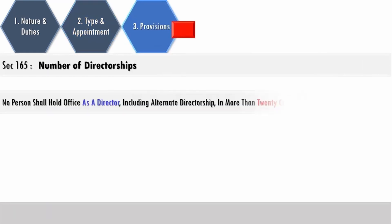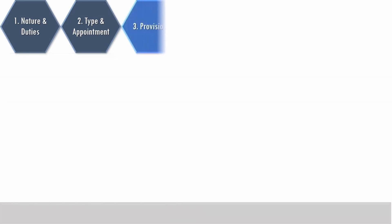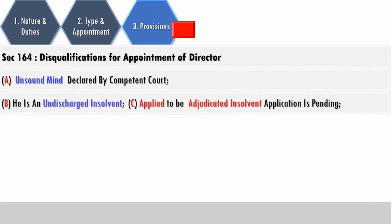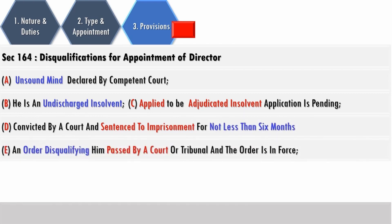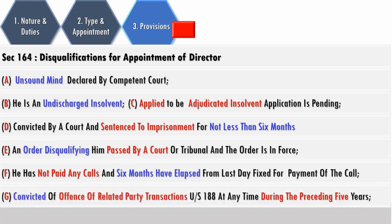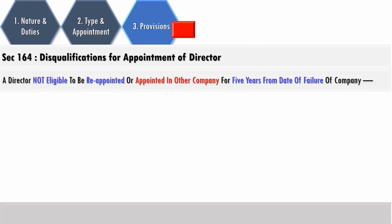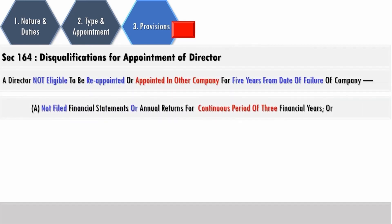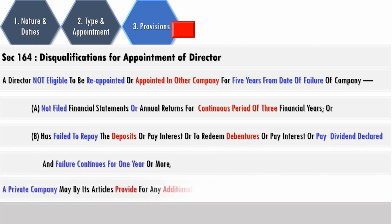The second company for a small shareholder director shall not be in a business competing with the company. Directorships including alternate directorships must not exceed twenty at the same time; the maximum number of public companies shall not exceed ten. Members by special resolution are at liberty to specify a lower number of companies. Disqualifications specified under Section 164 include: being of unsound mind as declared by a competent court, being an undischarged insolvent or having applied to be adjudicated insolvent with application pending, being convicted by a court and sentenced to imprisonment for not less than six months, having a disqualifying court order in force, having not paid any calls with six months lapsed from the last day fixed for payment, or having been convicted of an offense related to related party transactions during the preceding five years. A director is also not eligible to be appointed or reappointed for an offense committed by the company where the company has not filed financial statements or annual returns for a continuous period of three financial years, or has failed to repay deposits, debentures, or interest thereon, or pay declared dividend and the failure continues for one year or more. In respect of a private company, articles can provide for any additional disqualification.